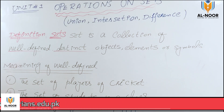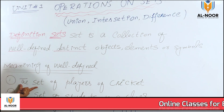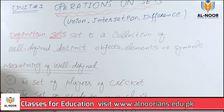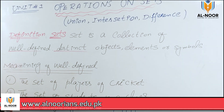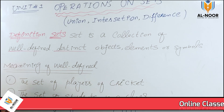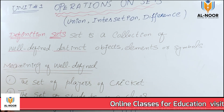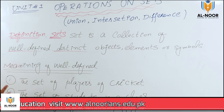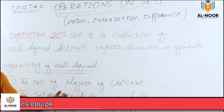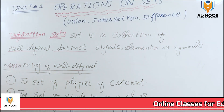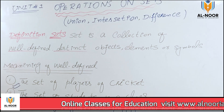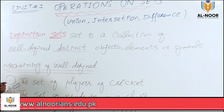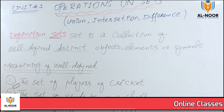ان 3 different examples میں well-defined کی معنی یہاں پہ آ رہی ہیں۔ The set of players of cricket — کرکٹ کے پلیئرز کا سیٹ۔ The set of students in a class — سٹوڈنٹس کا سیٹ۔ یہاں پہ سٹوڈنٹ کی کوئی خاص characteristic بیان نہیں کی گئی، simply لکھا گیا ہے۔ یہ example number 1, number 2, number 3 — یہ تو well-defined ہے۔